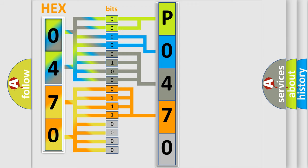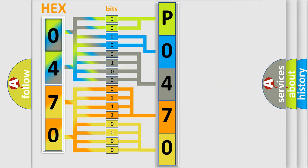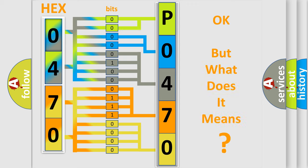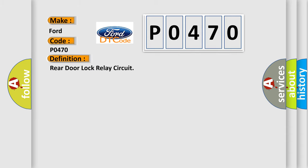A single byte conceals 256 possible combinations. We now know in what way the diagnostic tool translates the received information into a more comprehensible format. The number itself does not make sense if we cannot assign information about what it actually expresses. So, what does Diagnostic Trouble Code P0470 interpret specifically for Infiniti car manufacturers? The basic definition is: Rear Door Lock Relay Circuit.